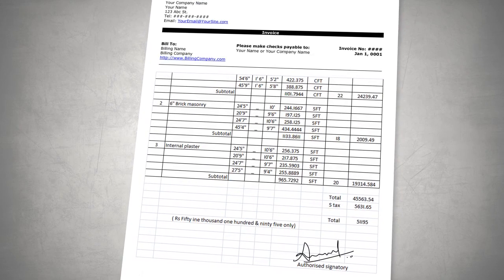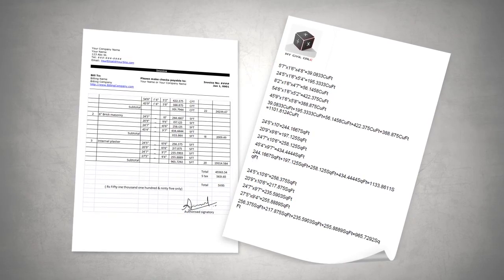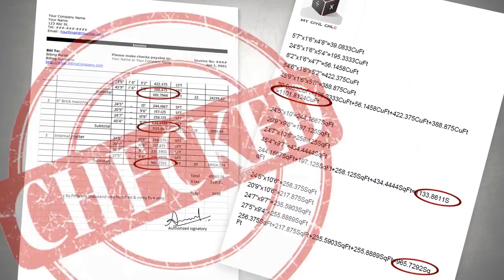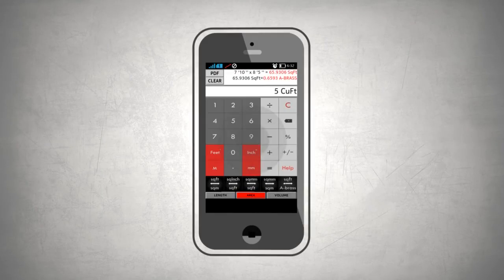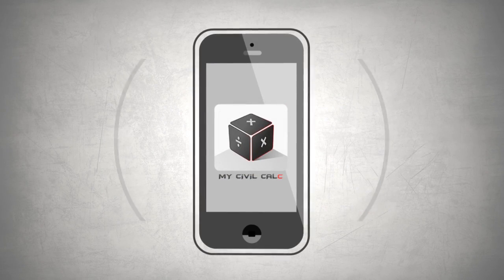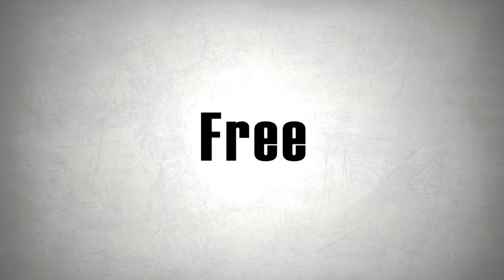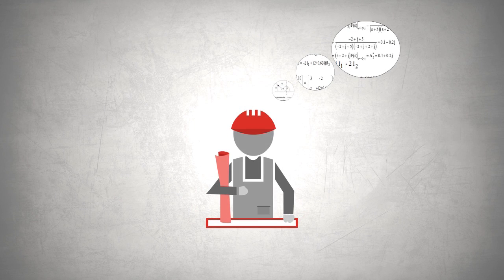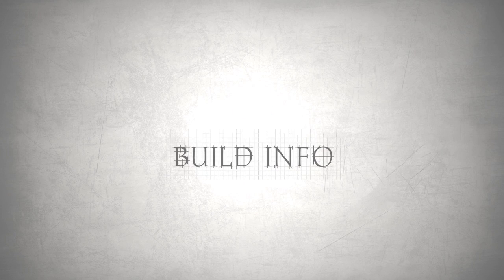This way you can be assured that the calculations and quantities are cross-checked, and there is no scope for error. Isn't this really smart and convenient? And it's also absolutely free. So download My Civil Calc now and say goodbye to all your calculation miseries forever.